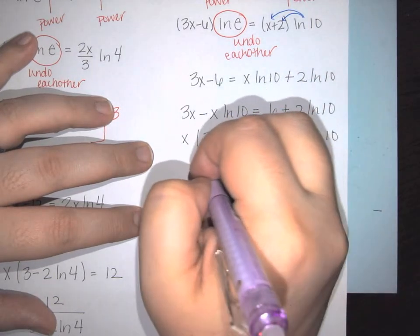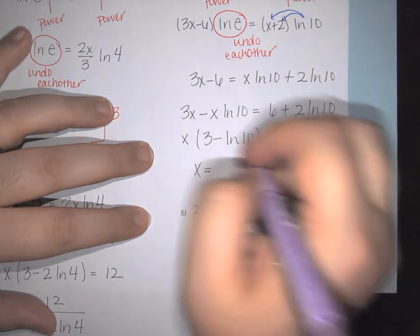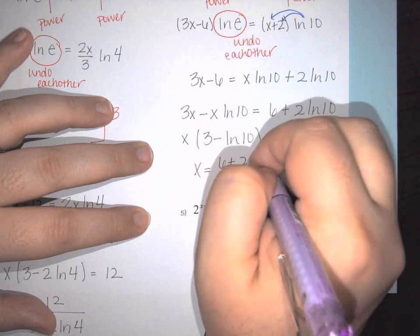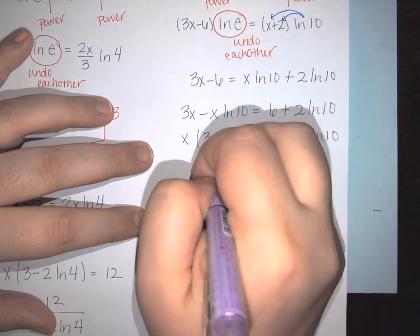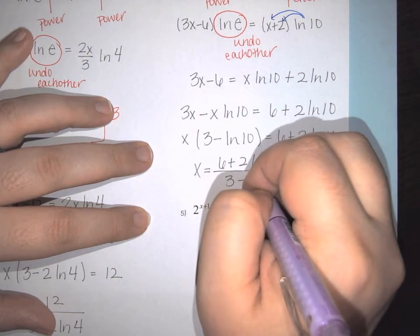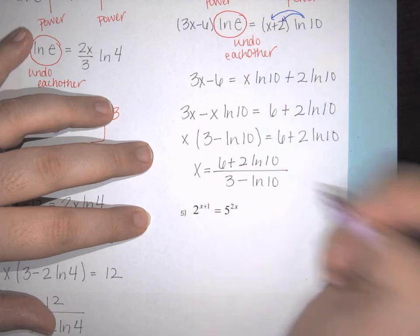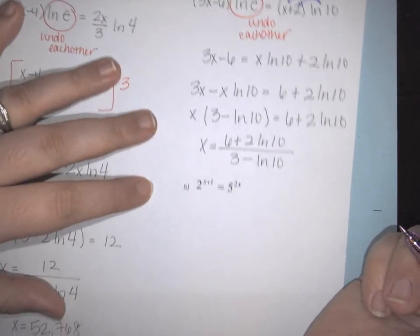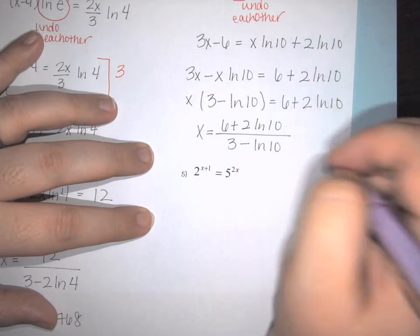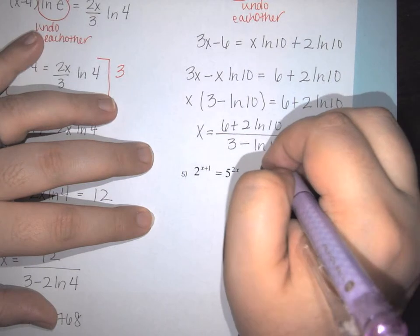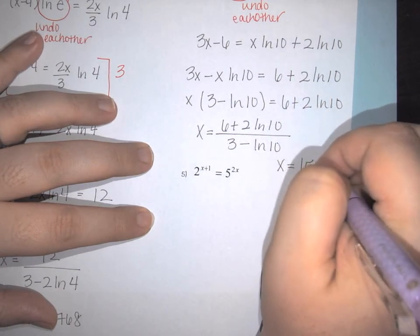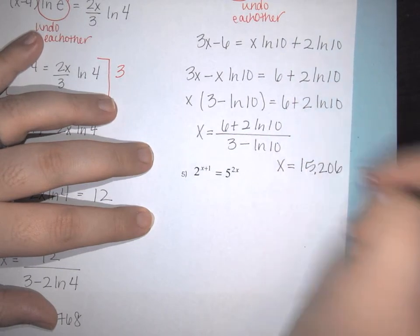Getting x by itself: x equals the quantity (6 plus 2 natural log of 10) over (3 minus natural log of 10). Evaluating gives x equals 15.206.